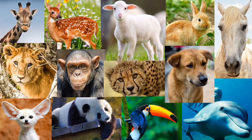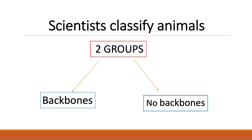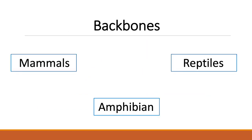There are thousands of different kinds of animals. However, all animals need water, food, air, shelter, and space to live. Animals also have parts that help them get what they need. Scientists classify animals into two main groups: the first group is animals with backbones, and the other group is animals without backbones. Examples of animals with backbones include mammals, amphibians, and reptiles.